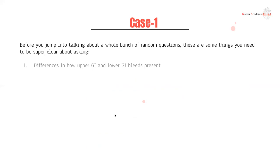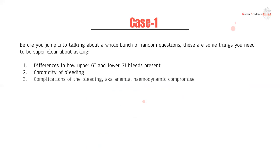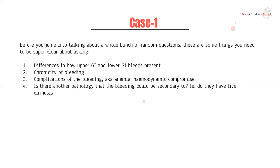Let's go through some cases, because I think the only way to really understand this is by going through cases. Before that, a few things to always clarify. You need to understand the difference in how upper and lower GI bleeds present. You need to evaluate the chronicity of bleeds, the complications like anemias and hemodynamic compromise, and whether there's any other underlying pathology — like liver cirrhosis causing esophageal varices, peptic ulcer disease, or colorectal cancer causing the bleeding.